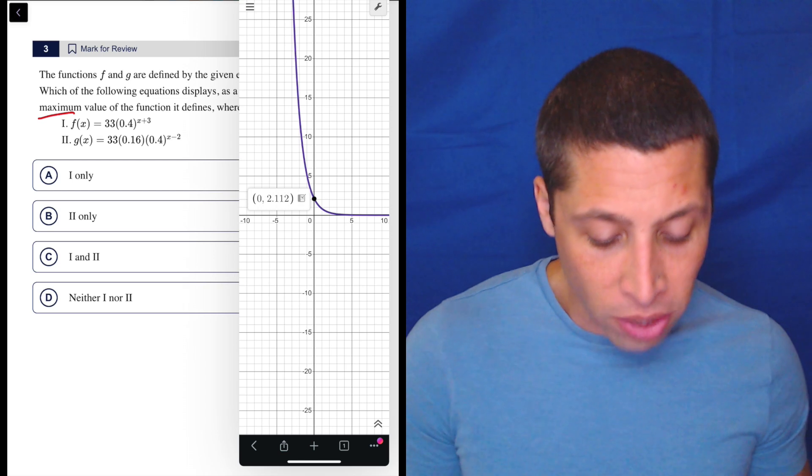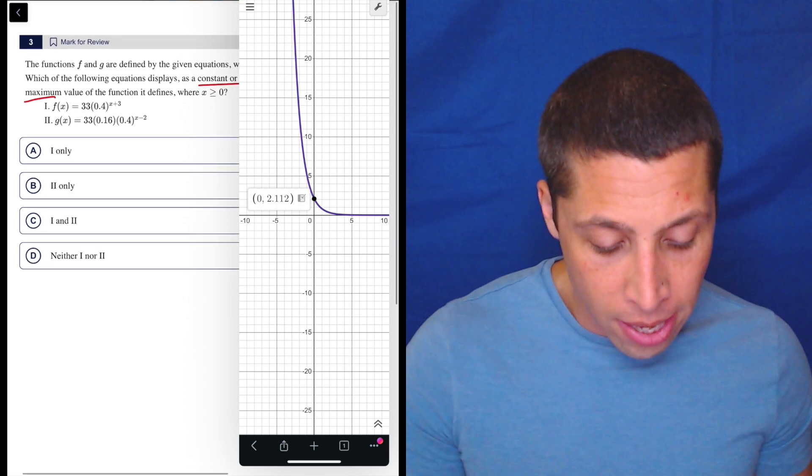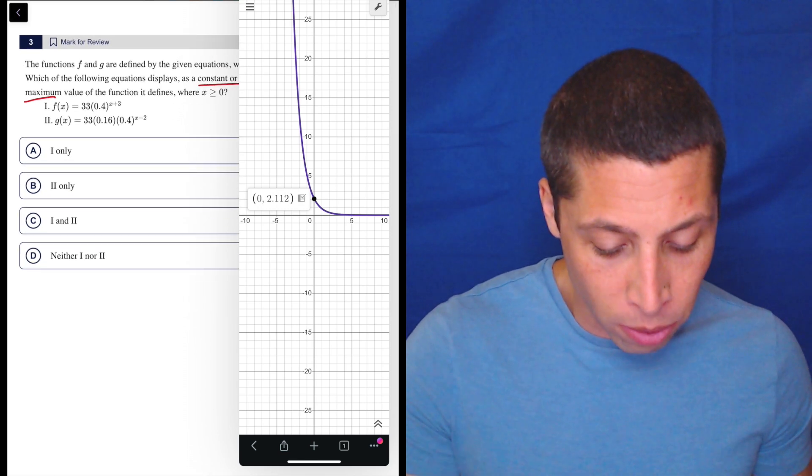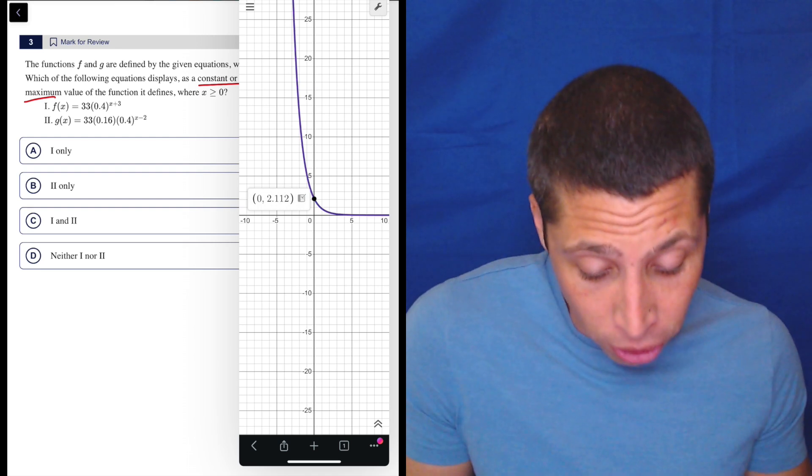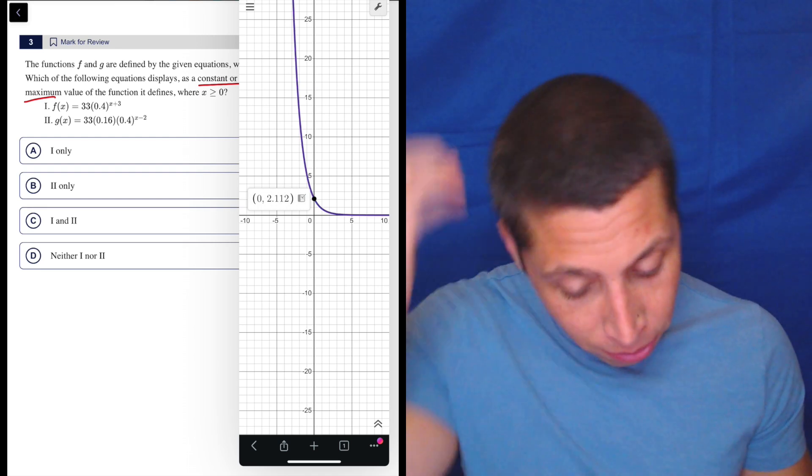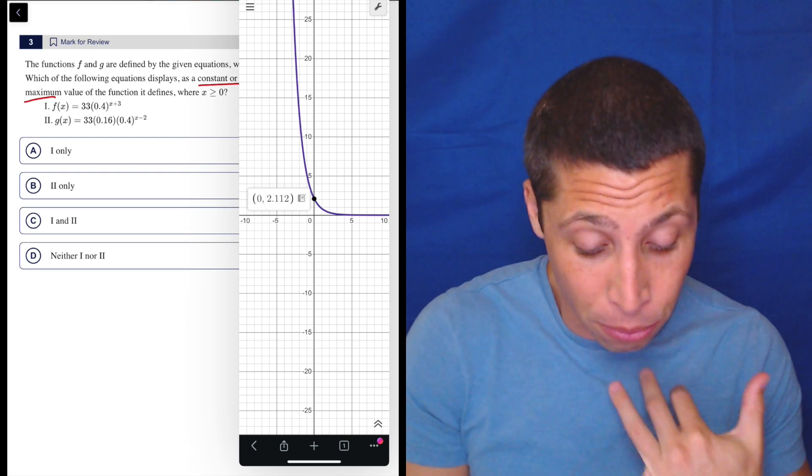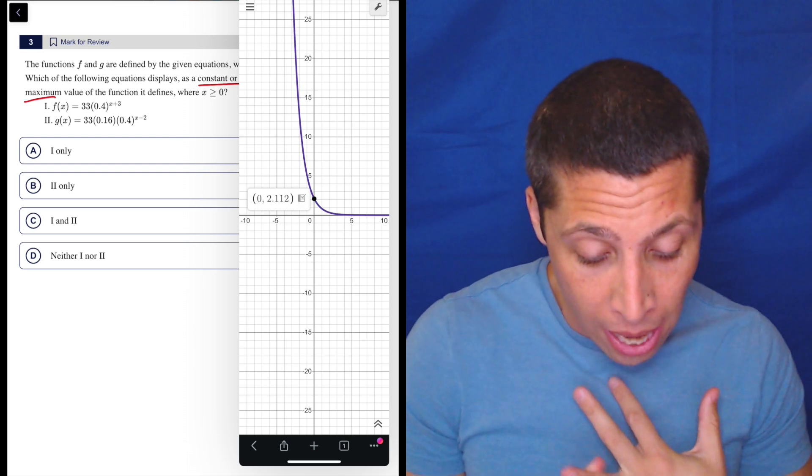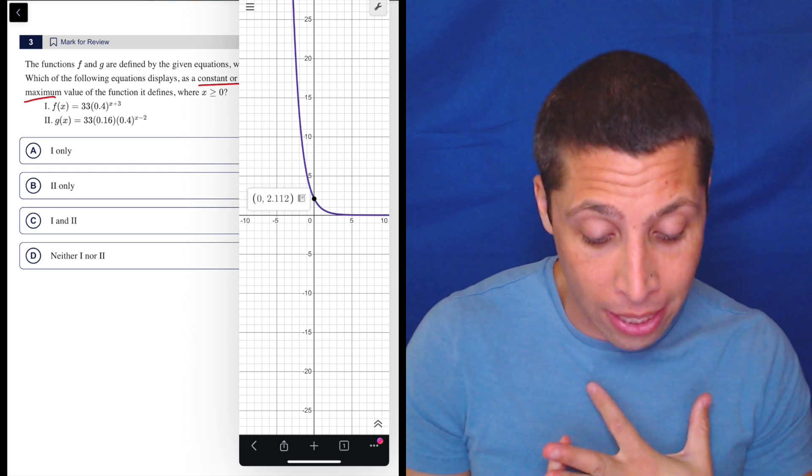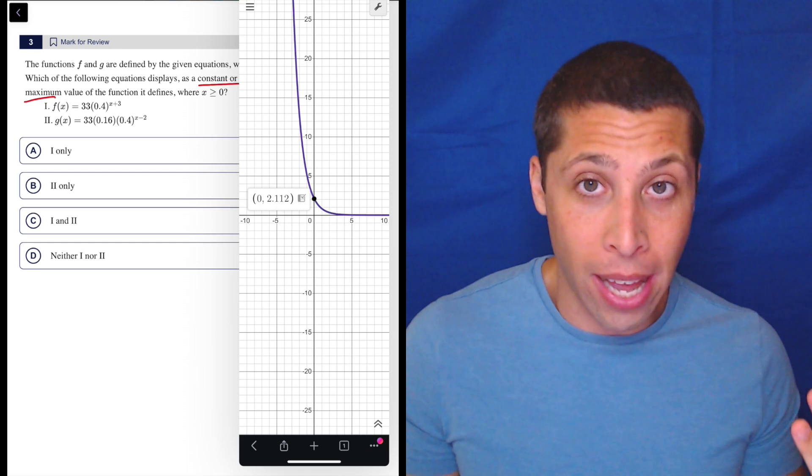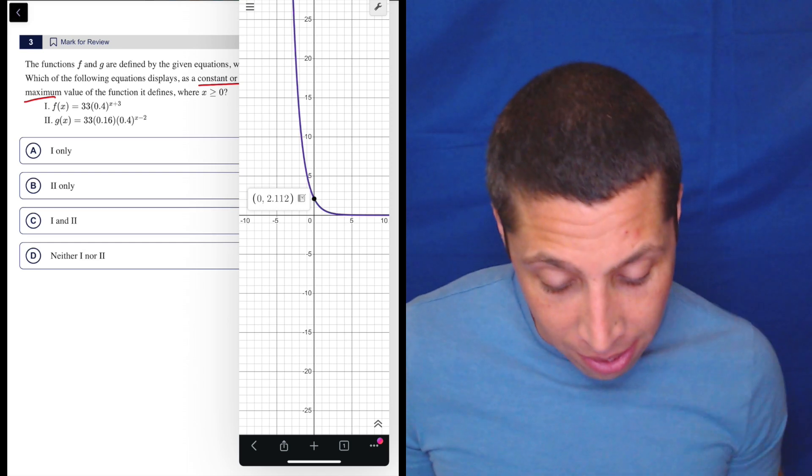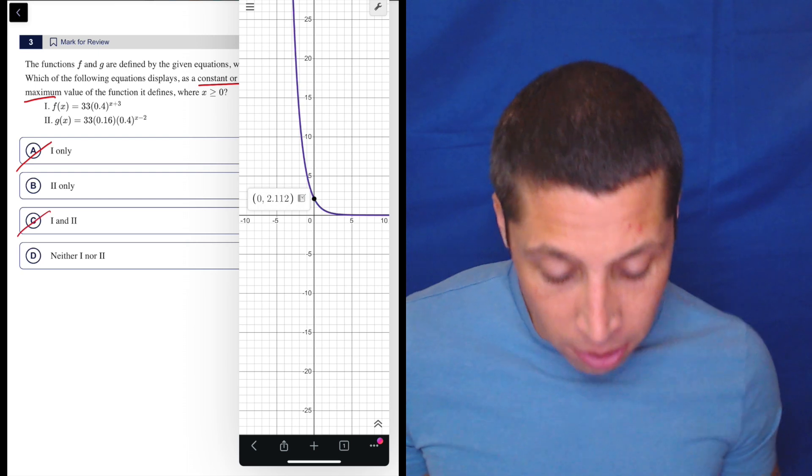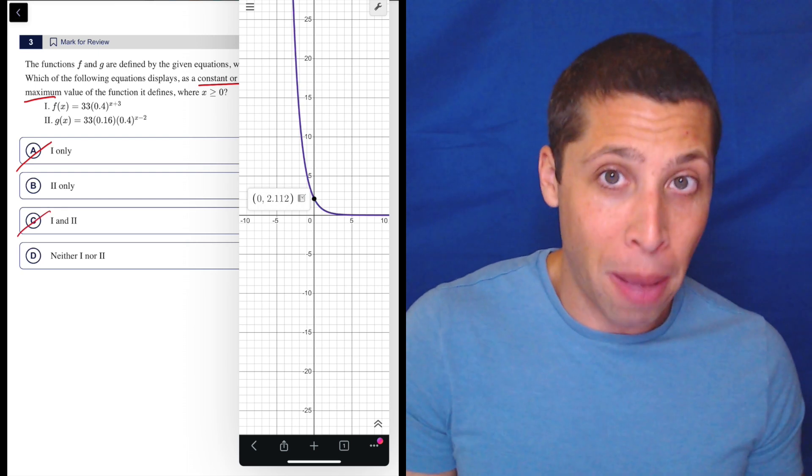So what they're saying in this question then is, does 2.112 show up in the equation itself? Do we see it? Maybe it's a fraction, so I'd have to be careful of that, but I don't see any fractions here. I see a 33, I see a 0.4, and I see a 3 and the plus 3 at the end. None of those for the f of x are 2.112. So that means that 1 is wrong. It's not showing the maximum here.